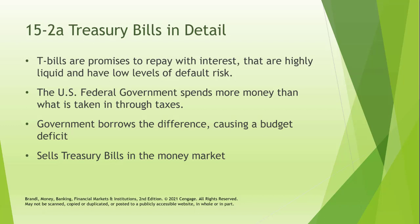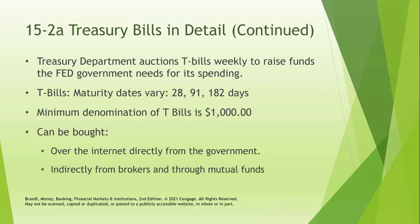Why does the government issue Treasury bills? Because the government spends more money than it has coming in, so T-bills are issued because the government borrows the difference, causing a budget deficit. The government sells T-bills into the money market to fund its budget deficit, so the money market in terms of T-bills is intimately related to the fiscal position of the government.